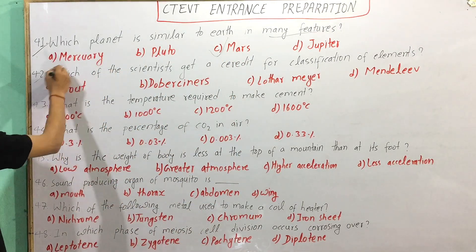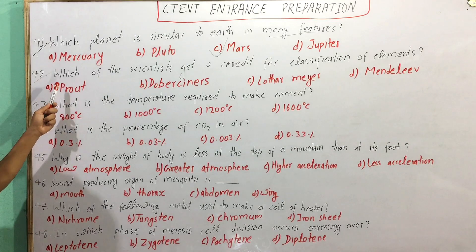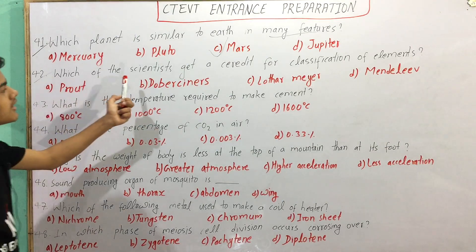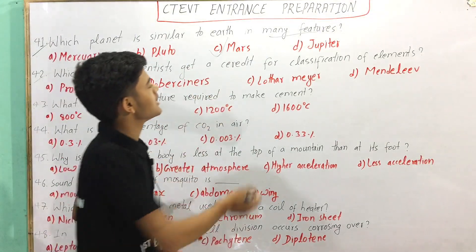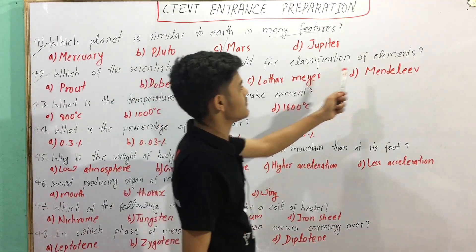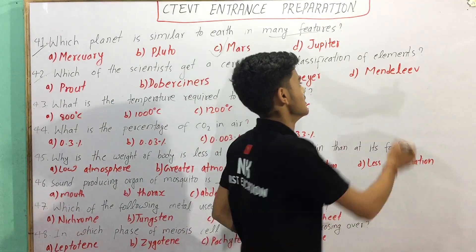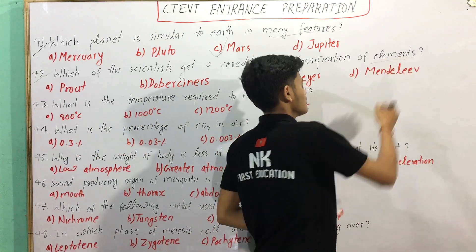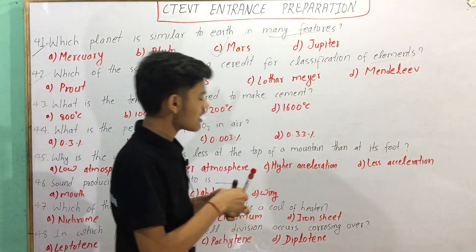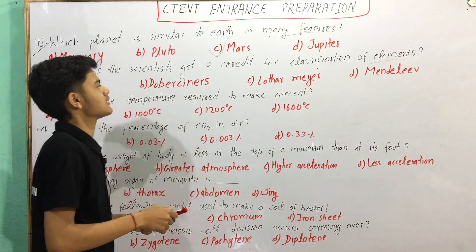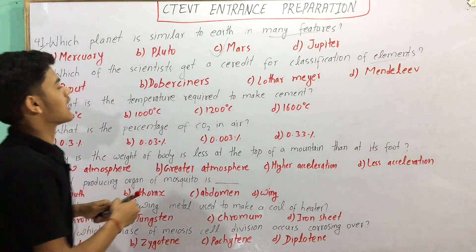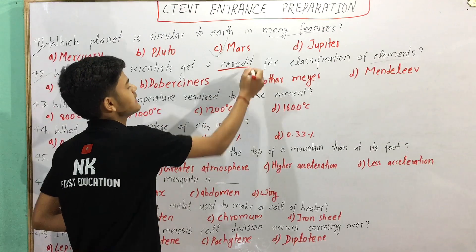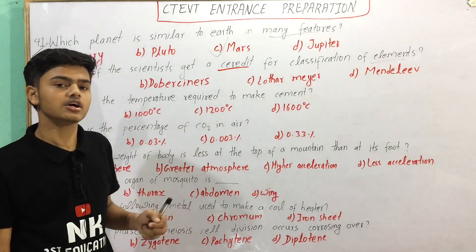Now we have 42 numbers. Without the scientists getting credit for classification of elements — elements in classification of any scientist or any credit of any scientist is the same.